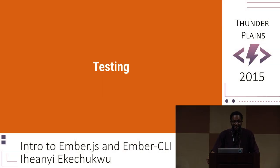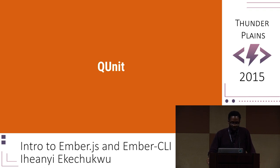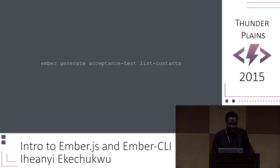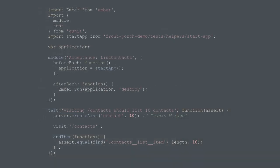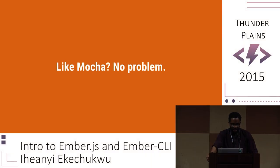Testing is important. Ember CLI makes testing painless — for the few times I've done it, it's actually been pretty enjoyable. By default, Ember ships with QUnit for running tests. To test our contacts route, we generate an acceptance test TDD style. In the testing block, we create mock values with Mirage and visit the contacts route to make sure 10 contacts are displayed in the front end. You can watch your tests run in the browser and see the results. If you prefer Mocha, just use ember install ember-cli-mocha and it will generate tests using Mocha's testing syntax.